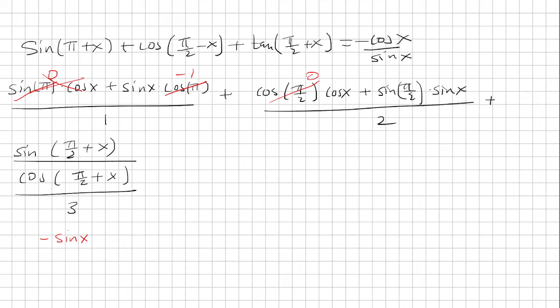Cosine of pi over 2 is 0 times cosine, that thing goes away. Sine of pi over 2, well that's just 1. So 1 times sine is sine.